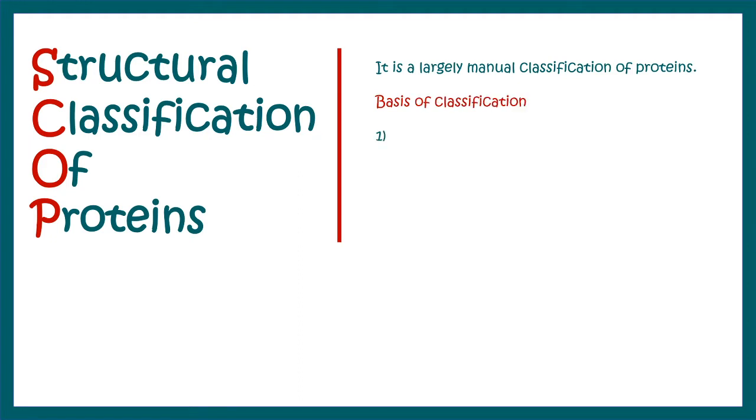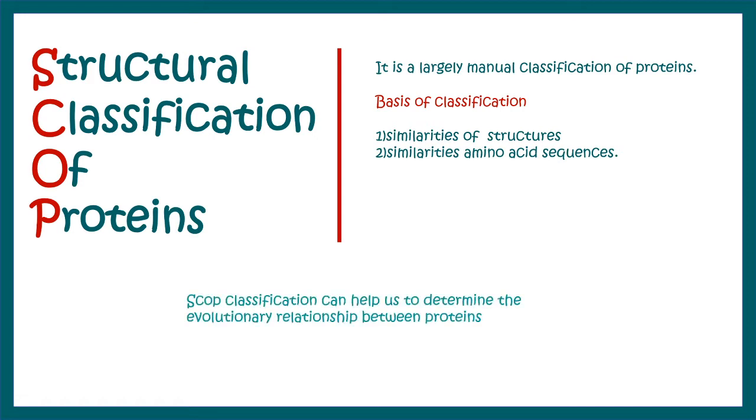Let's look at the basis of classification. First of all, similarities of the structures are determined and similarities of amino acid sequences are considered while classifying these proteins. There are several bases of classification and hierarchy of classification. The biggest thing about SCOP database is the classification system can help us determine the evolutionary relationship between two or more proteins.